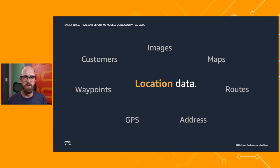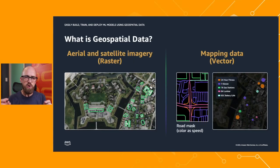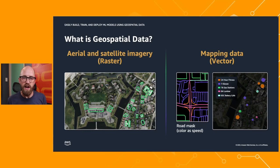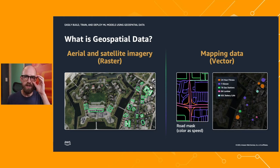Now let's look at geospatial from a technical point of view. There are two different types of geospatial information. There's raster information — these essentially are images. If you think of a photograph that's been taken of the surface of the Earth, that's a raster geospatial image, as long as it's got metadata to explain whereabouts it is on the surface of the planet. It doesn't have to be just visible light — we could use all kinds of different types of electromagnetic radiation, like infrared, to read things about the surface. But at the end of the day, when you and I look at it, it looks like an image. That's raster-based geospatial information.